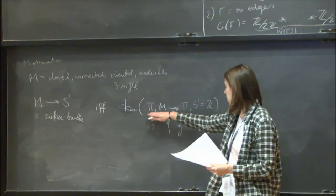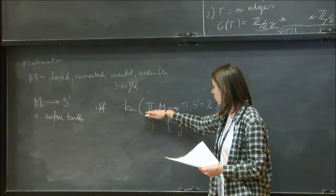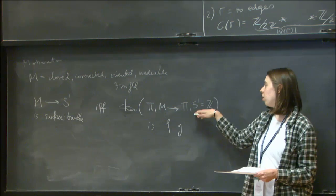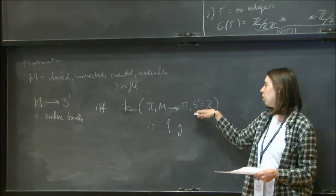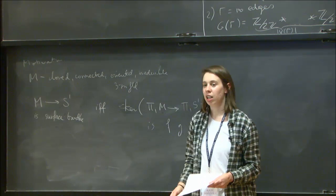So you see that this condition — that the kernel of the homomorphism from your group to ℤ is finitely generated — has this strong geometric meaning.